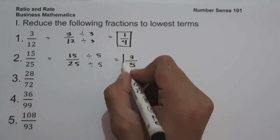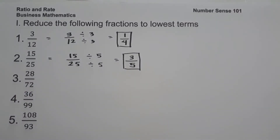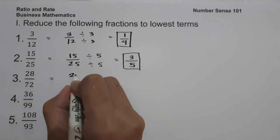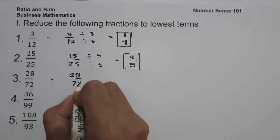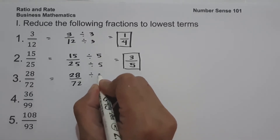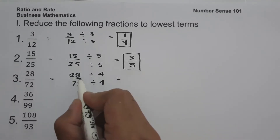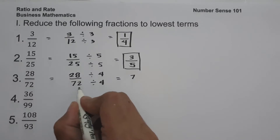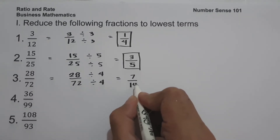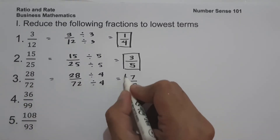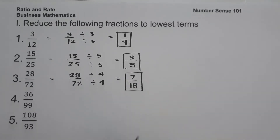On number 3, we have 28 over 72. The greatest common factor between 28 and 72 is 4. Let us divide the numerator and the denominator by 4. 28 divided by 4 is 7, and 72 divided by 4 is 18. Therefore 28 over 72 equals 7 over 18.